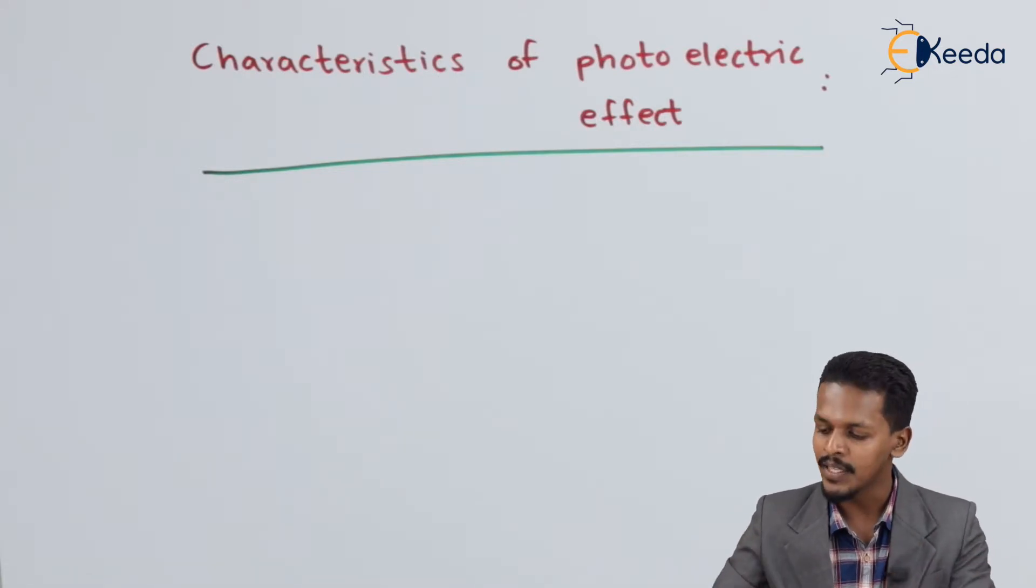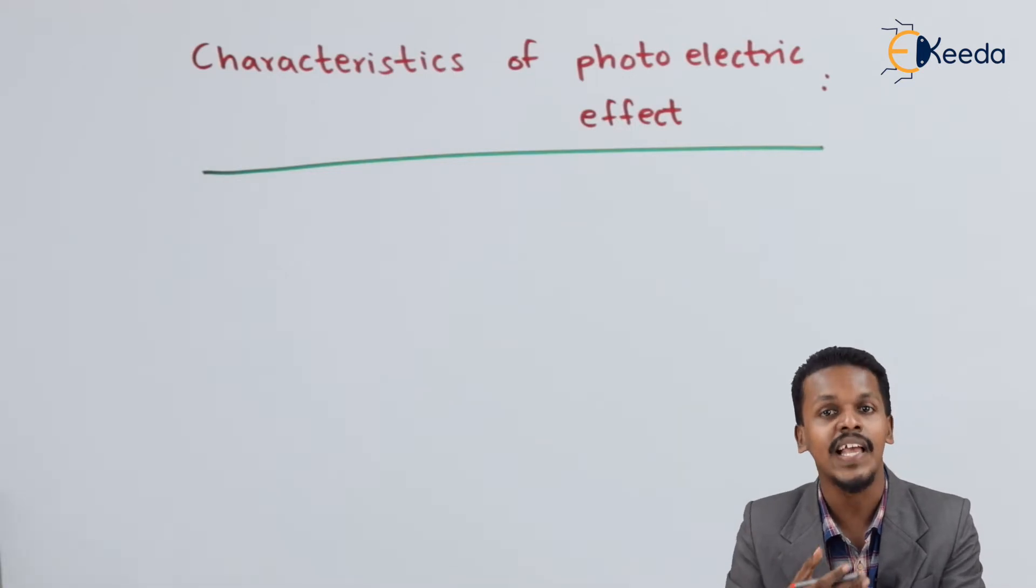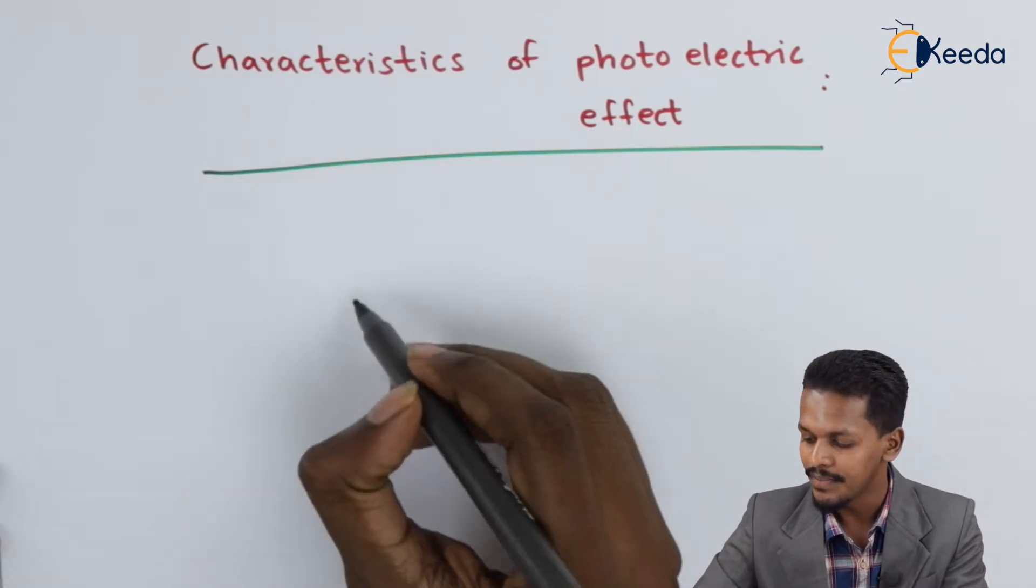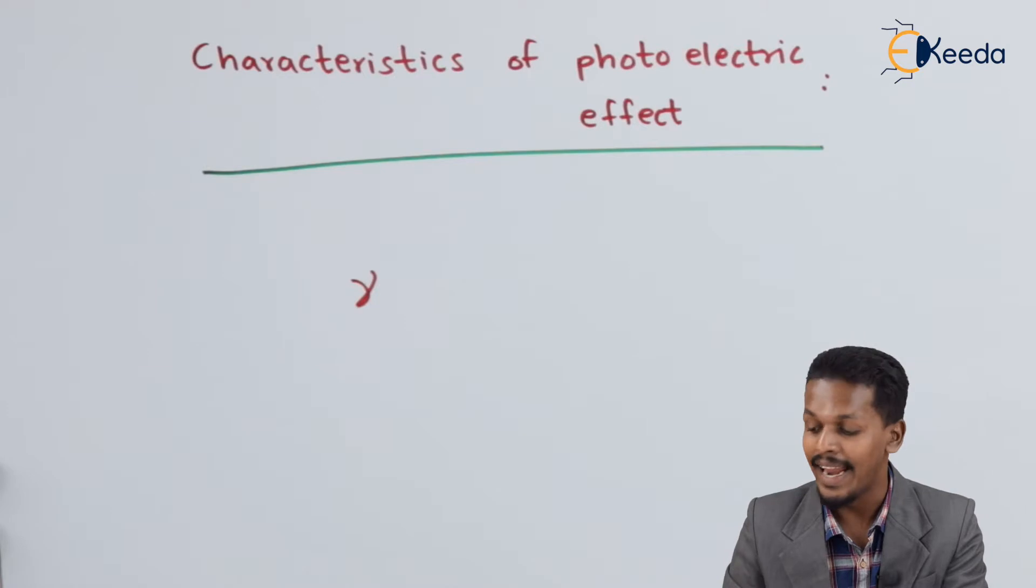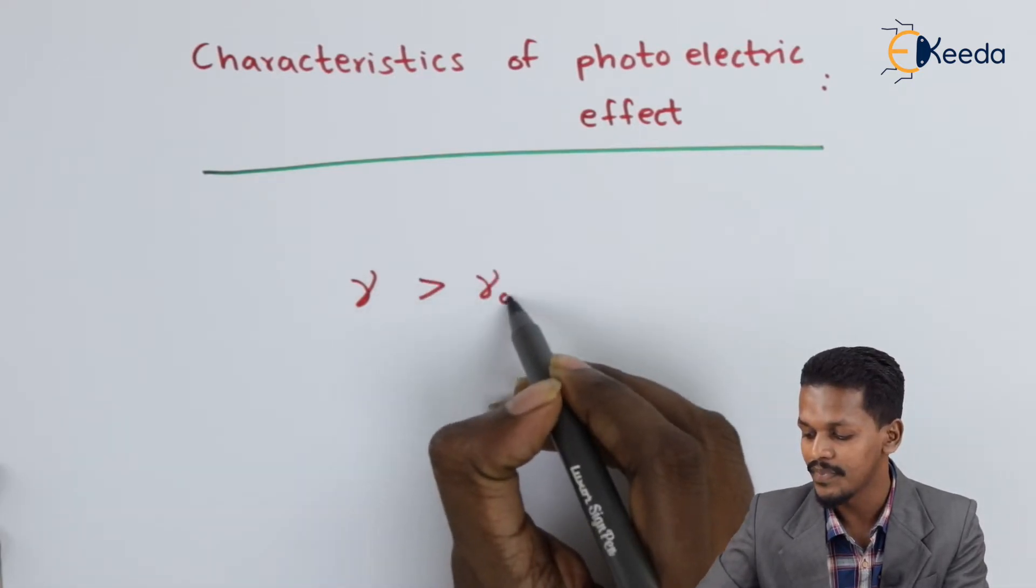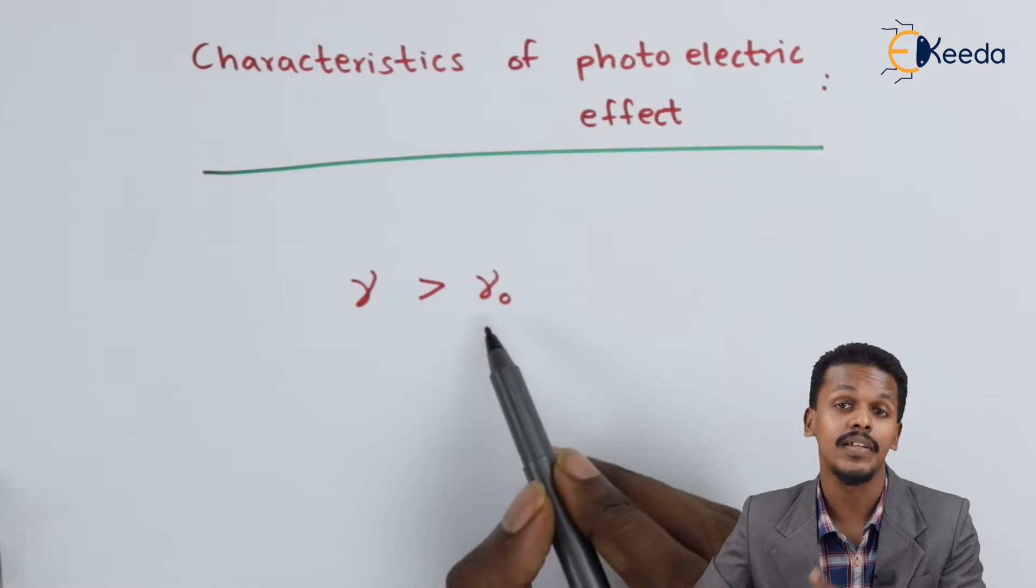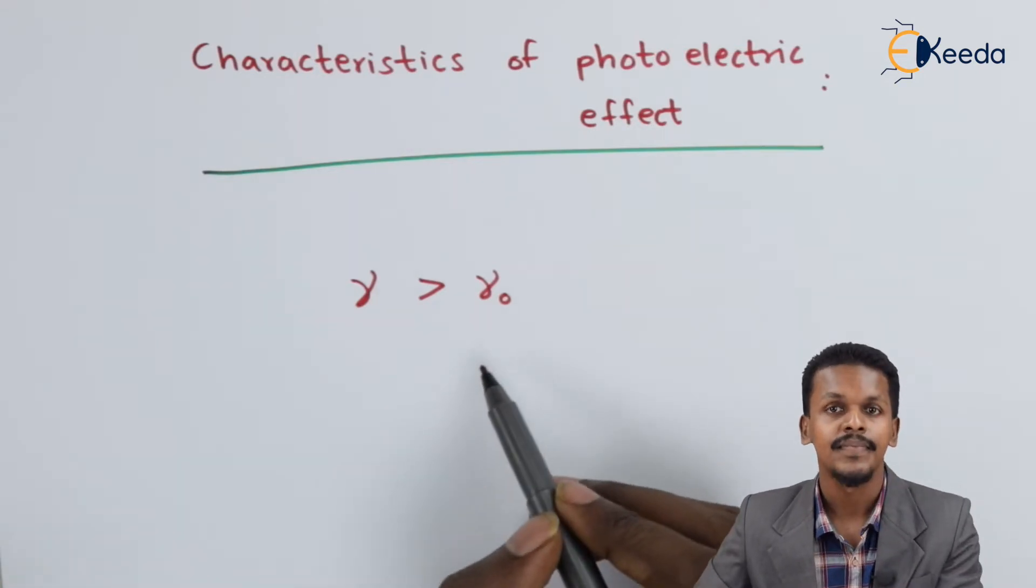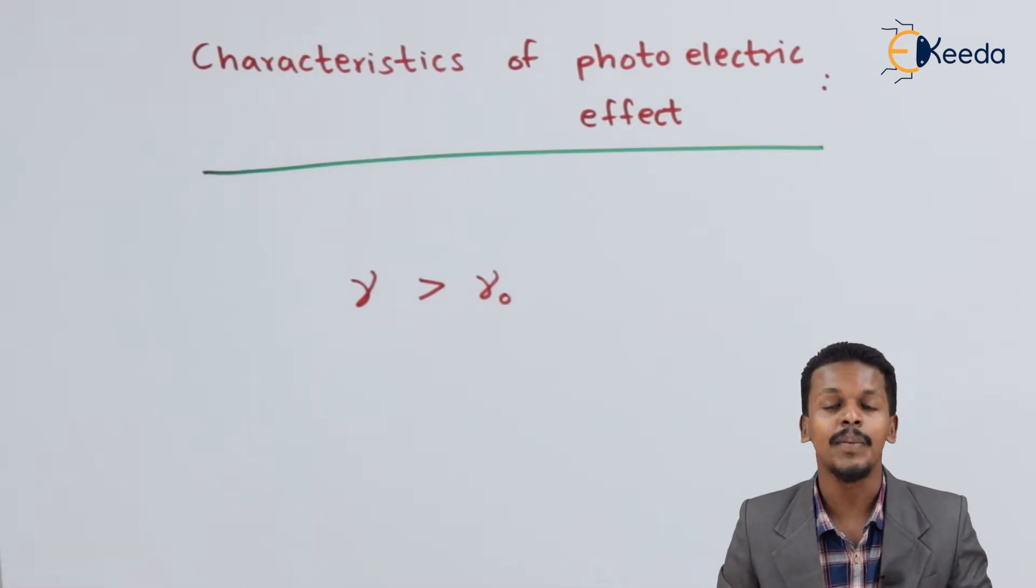If we supply energy with a frequency which is more than the threshold frequency... What is threshold frequency? Threshold frequency is the minimum frequency required to remove an electron from a metal.